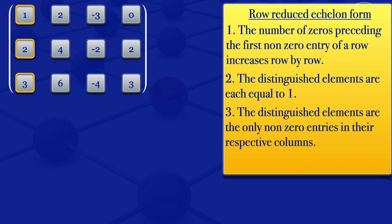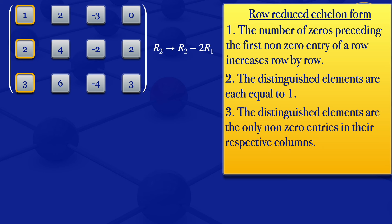I can start by row number two. We need a zero where we have that two. To achieve that, we can use row number one, because the corresponding part there is a one. When we have a two here, to make it a zero, we multiply row number one — which is a one — by two to get a two, then subtract that from the two to get a zero. So we transform row two to row two minus two times row one.